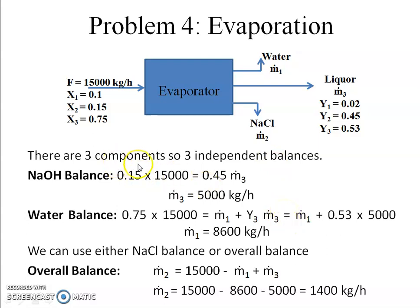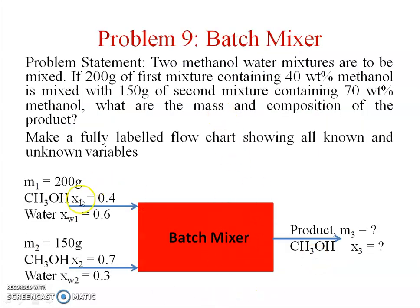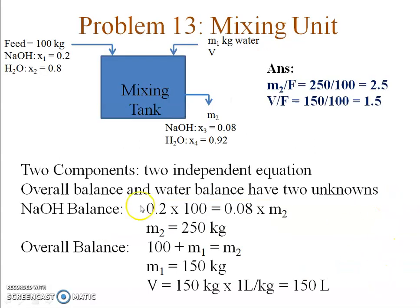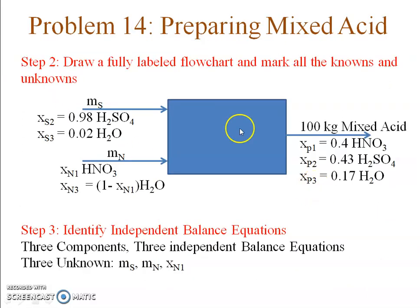I always counted the number of unknowns and the number of equations I could write — if they matched, I solved the problem. In the batch mixer, the unknowns were m3 and x3, with two components and two independent balances. In the tray dryer, again two components, two unknowns m1 and m2. The same applied to the mixing unit and other problems with three unknowns and three independent balances.